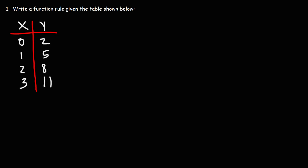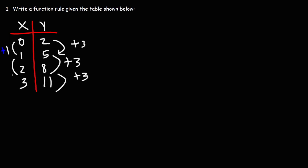Write a function rule given the table shown below. First we need to establish what kind of function we have. Looking at the numbers for x and y, we can see it's a linear function. Whenever x increases by one, y increases by three. Because we have a constant change for y for every constant change for x, we know we're dealing with a linear function.